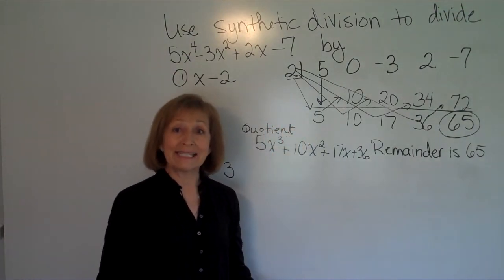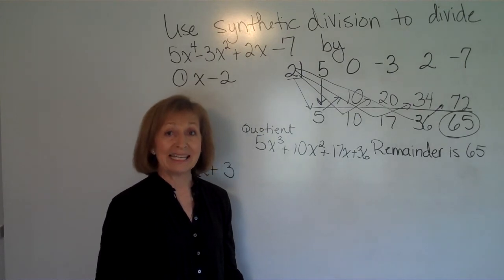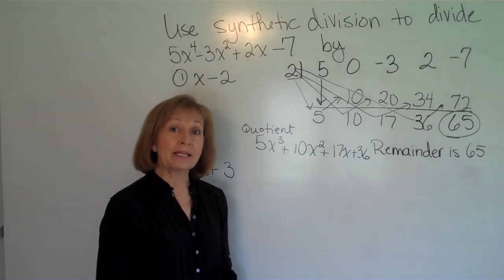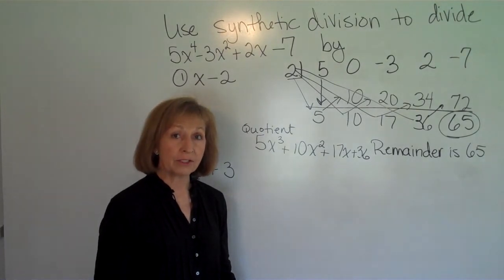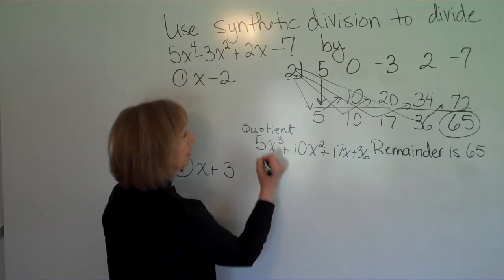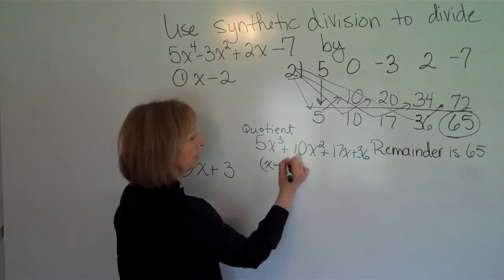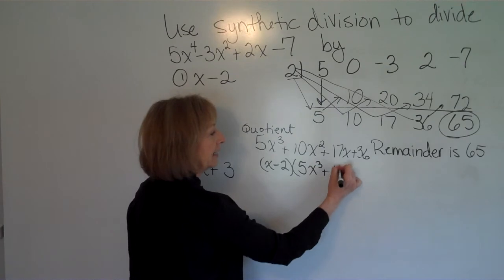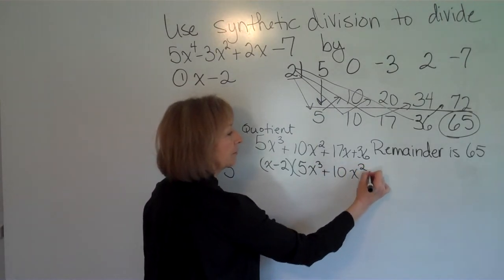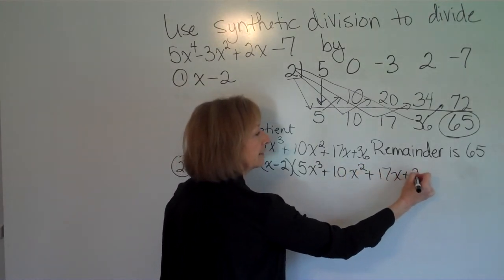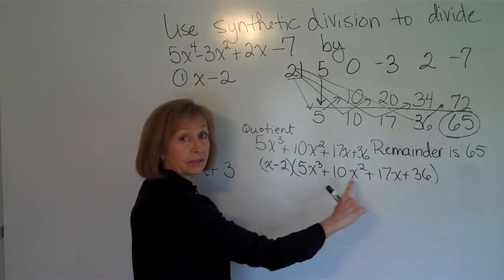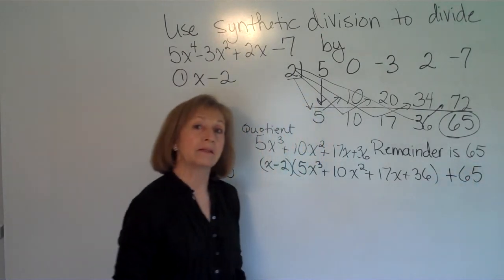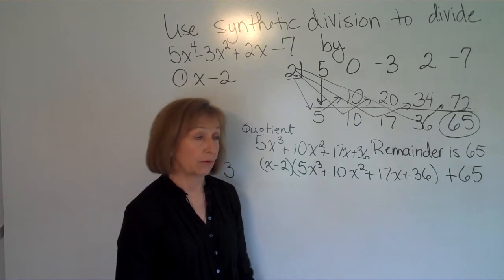Now if they want you to write the answer as divisor times the quotient plus the remainder form, then your divisor is what you divided by: (x - 2) times the quotient (5x^3 + 10x^2 + 17x + 36) plus the remainder 65. That would be the way you would write it if it asked you specifically for that sort of thing.